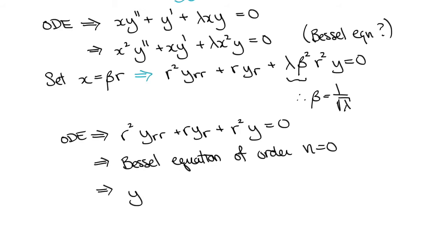Now the two linearly independent solutions to the Bessel equation are given by the Bessel functions of the first and second kind, j0 and y0. However, we know that y0 blows up as r tends to 0, so the behavioral boundary condition allows us to set b equal to 0.